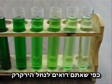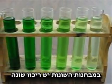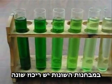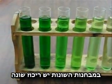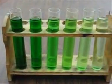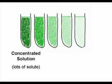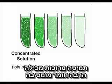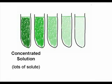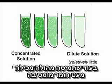As you see, the green Kool-Aid and these test tubes have different concentrations. A concentrated solution has a lot of solute dissolved in it, while a dilute solution has only a bit of solute dissolved in it.